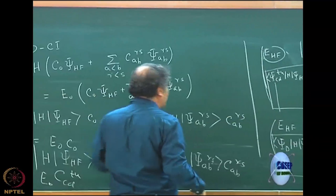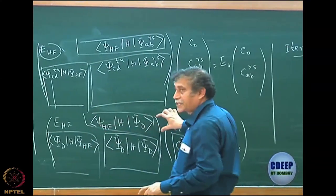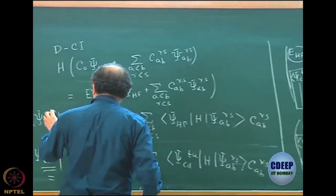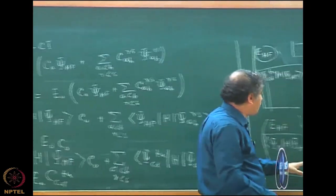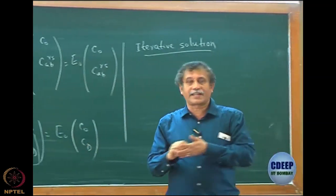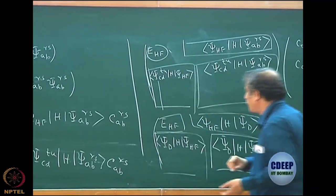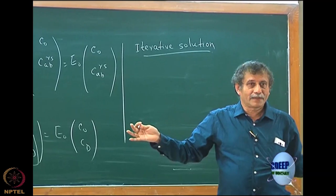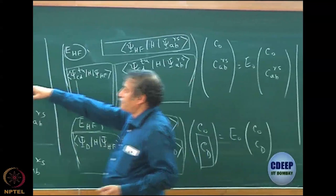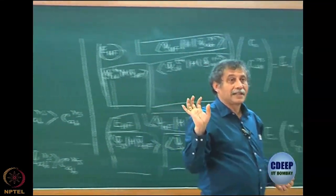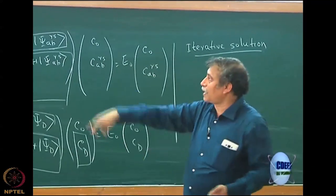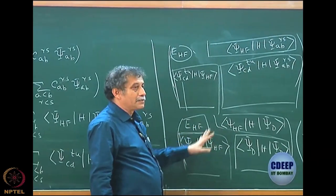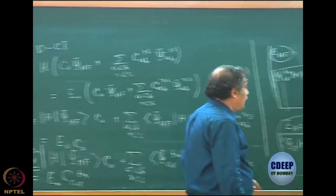Essentially, you have to construct a matrix of the Hamiltonian in the basis of the determinants included in the CI. The first determinant is psi Hartree-Fock, giving E Hartree-Fock. Then there is a set of numbers between psi HF and all psi_ABRS, and similarly a column from projecting with doubly excited determinants. The doubles-to-doubles block forms a square matrix. If the number of doubles is n, the total dimension of the matrix is n plus 1.